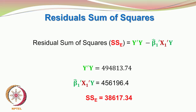Higher the residual sum of squares, higher would be the deviation between the experimental data and the model predictions. We have the residual sum of squares as y'y - β̂₁' x₁' y for this present case.